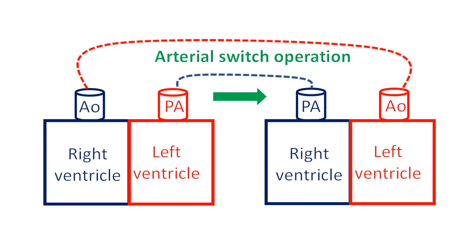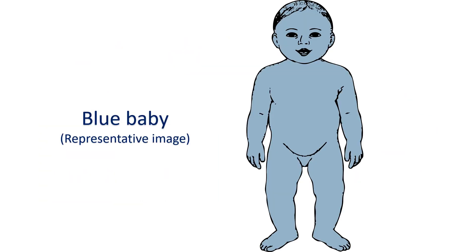The aim of these procedures is to re-route the blood with low oxygen returning from the body to the lungs, and the oxygenated blood returning from the lungs to the aorta. A baby with transposition of great vessels is usually born as a blue baby and develops features of heart failure soon. Hence, it is very important to detect this condition soon after birth. Screening of all newborn babies with pulse oximetry to check oxygen saturation in the blood is useful in detecting such major birth defects of the heart.